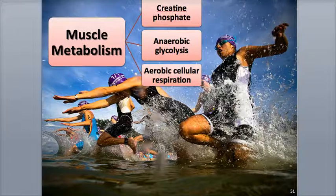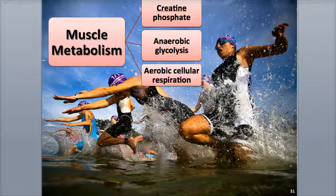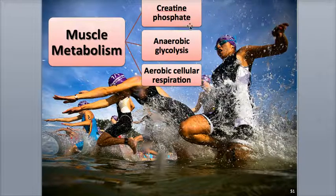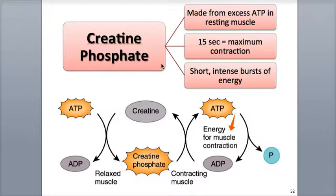In order to power extended periods of muscle contraction, ATP production is a continuous job of the muscle fibers, and they have several ways of making more ATP. Muscle fibers can make ATP from creatine phosphate, by anaerobic glycolysis, and through the reactions of aerobic cellular respiration.